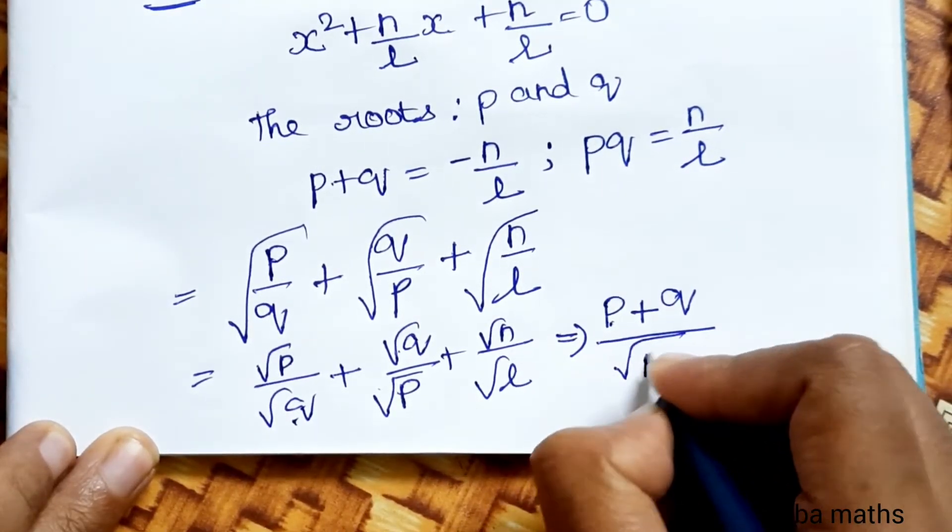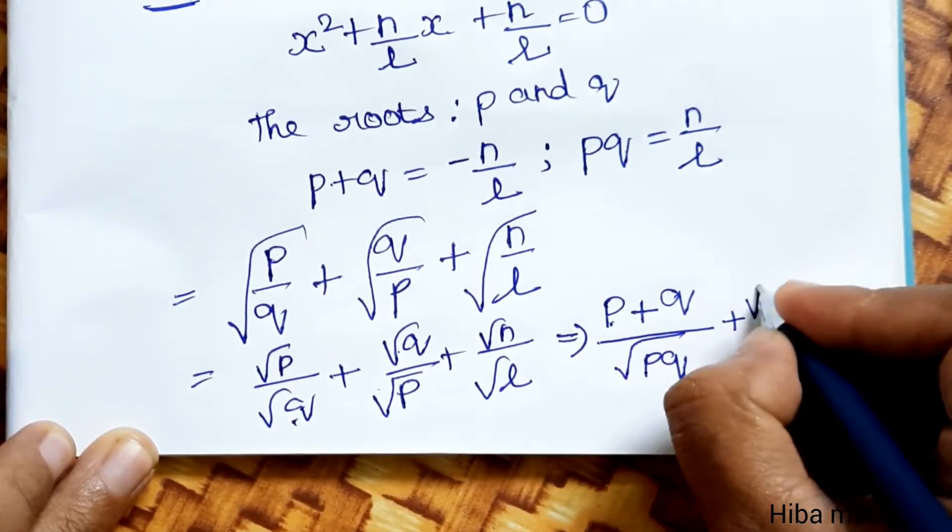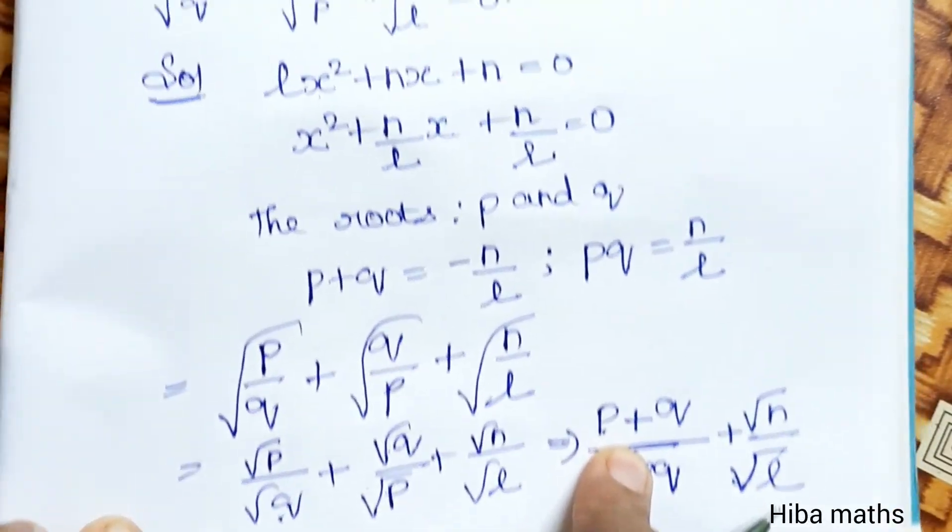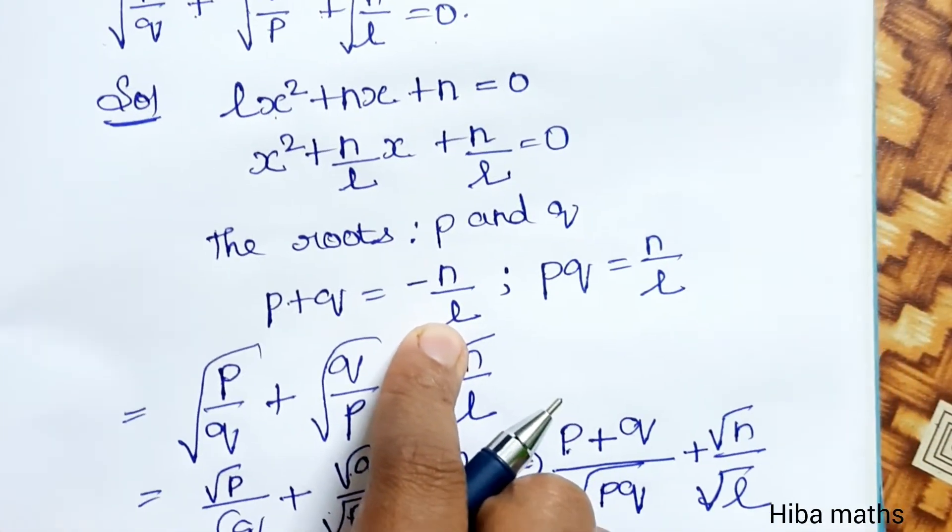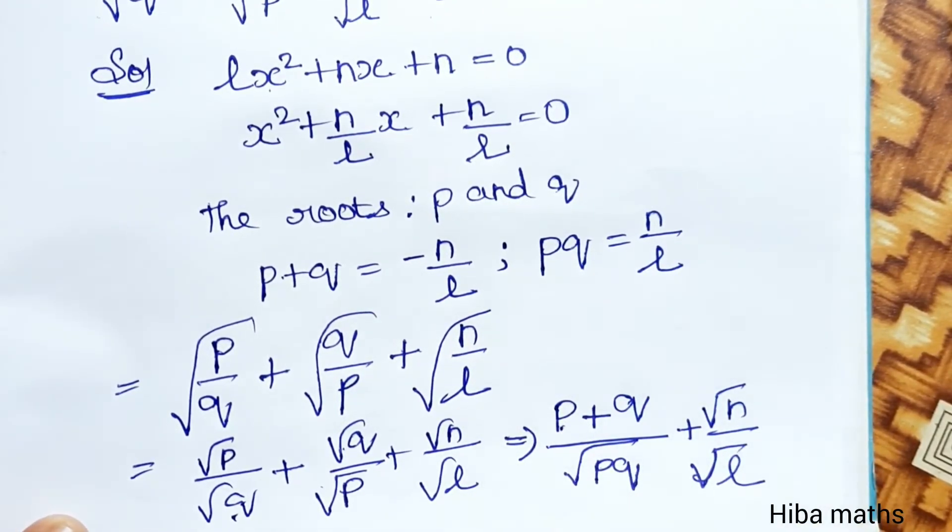√(pq) plus √(n/l). If pq value = -n/l, substitute. pq value n/l, root substitute, okay.